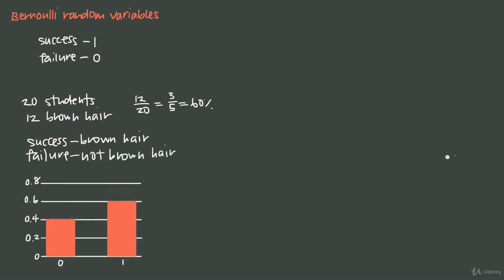We can sketch a Bernoulli distribution for this data. Success is brown hair, that's a one, and failure is not brown hair, that's a zero. We said that 60% of the students had brown hair, so we plot that bar up to 0.6 or 60%. That means 40% of the students don't have brown hair, because we have to account for 100% of the students, and 100% minus 60% is 40%. So 0.4 represents not having brown hair.